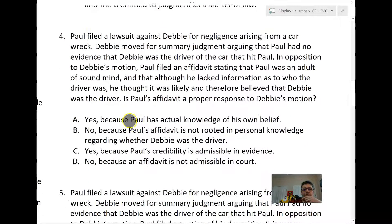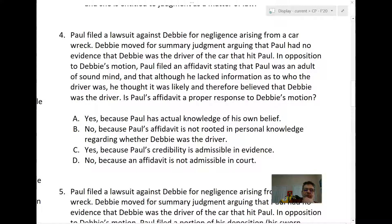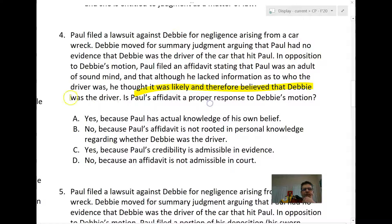Question four: Paul filed against Debbie. Debbie moves for summary judgment. In opposition, Paul files an affidavit saying he was an adult of sound mind, and that although he lacked information as to who the driver was, he thought it was likely and therefore believed that Debbie was the driver. Is Paul's affidavit a proper response to Debbie's motion — A, B, C, or D?